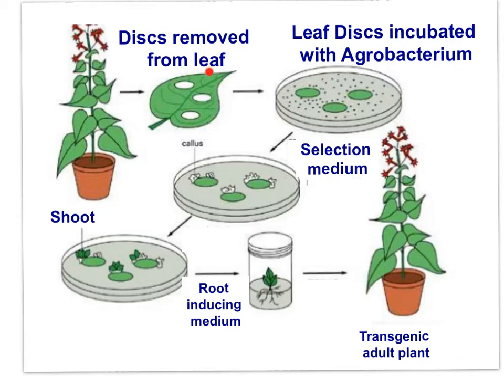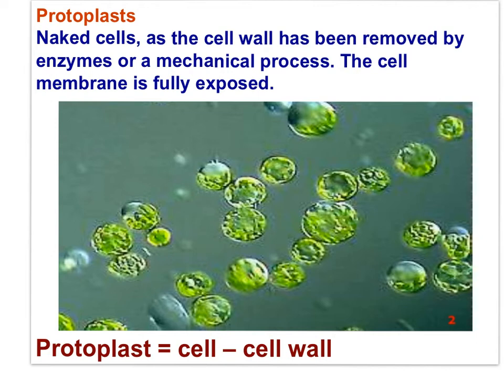In this diagram, leaf discs are taken from the whole leaf and then exposed to Agrobacterium tumefaciens, which transfers a recombinant plasmid to the leaf discs. The discs are placed on selective medium and grown into a whole transgenic plant. Recombinant DNA can also be introduced into protoplasts — naked cells from which the cell wall has been removed by enzymes or a mechanical process, leaving the cell membrane fully exposed to the recombinant DNA.